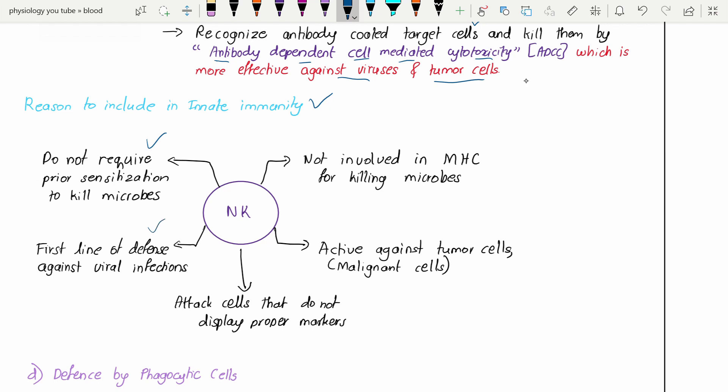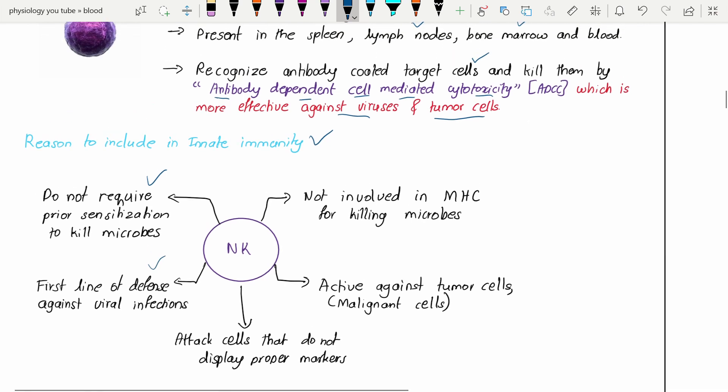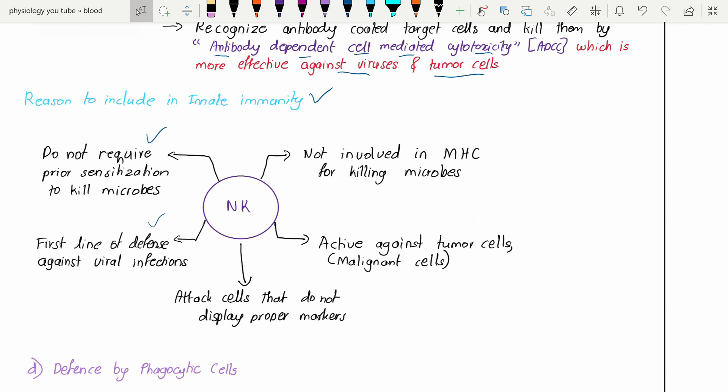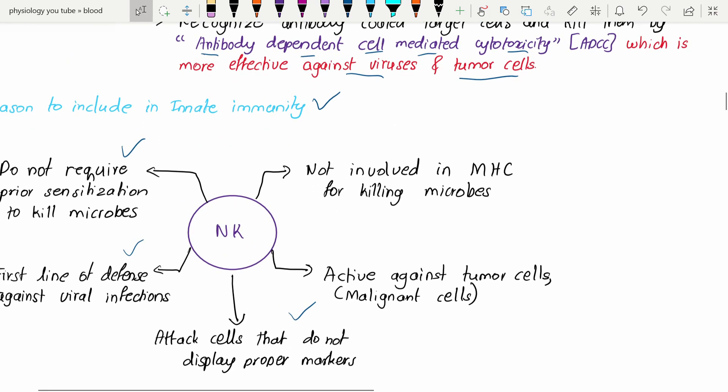They are the first line of defense against viral infections. As you know, these secrete interferons. They attack the cells that do not display proper markers. First you need to know that our cells have certain markers present over the cell membranes. Usually our immune cells recognize those markers and think these are our own cells. But if the cell markers are defective or not present, they will kill them because they think they are enemies.